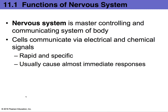How we respond to external stimuli, as well as internal stimuli, is also the responsibility of the nervous system. The cells that make up the nervous system communicate with one another via electrical and chemical signals. These electrochemical impulses are specific, occur at a very high rate of speed, and usually bring about an immediate response.